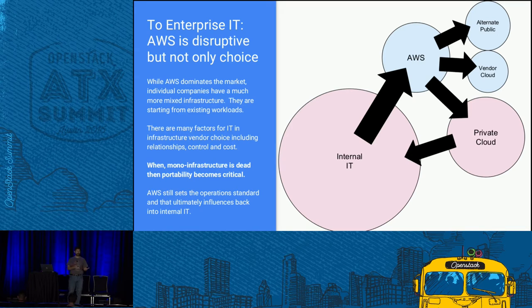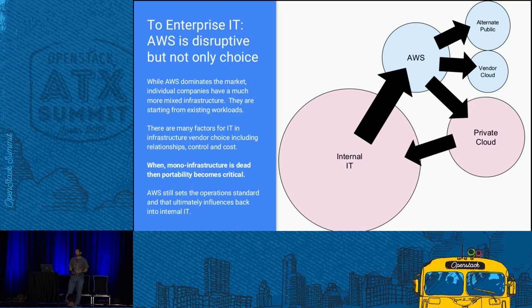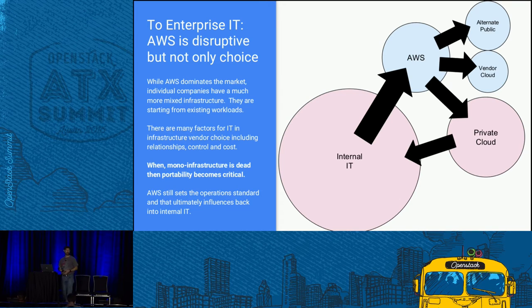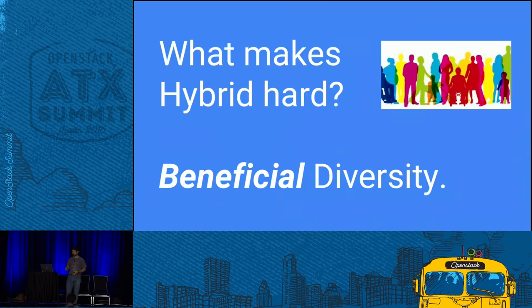With OpenStack, private cloud is a very serious thing. Amazon is already there, and people are looking for ways to have internal control, cost management, or security — so they want to come back to private cloud. The highlight is that all of these things are really about portability, choice, and moving things back and forth. If we don't do this, it just becomes an Amazon-eats-the-world market.